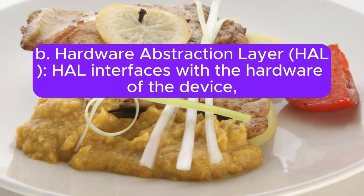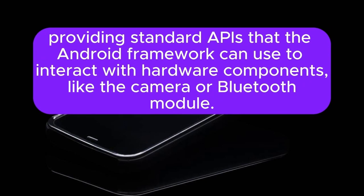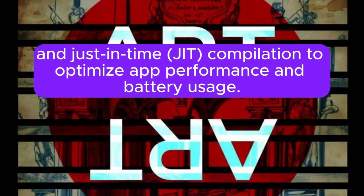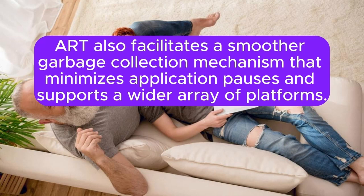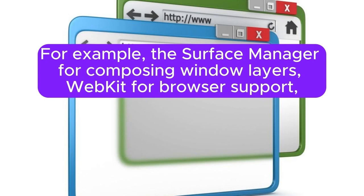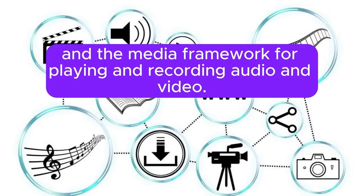The Hardware Abstraction Layer (HAL) interfaces with the hardware of the device, providing standard APIs that the Android framework can use to interact with hardware components like the camera or Bluetooth module. Android Runtime (ART), replacing Dalvik in Android 4.4 and above, uses ahead-of-time (AOT) and just-in-time (JIT) compilation to optimize app performance and battery usage. ART also facilitates smoother garbage collection that minimizes application pauses and supports a wider array of platforms.